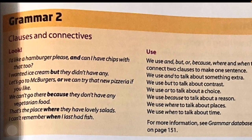We use 'or' to talk about a choice. Біз 'or' / яғни немесе деген сөзді таңдау айтатын кезде қолданамыз. For example: 'Let's go to Mug Burgers, or we can try that new pizzeria if you like.' — Қанеке Мак Бургерге барайық, немесе біз жаңа пиццерияға қаласаңыз барып көруге болады.